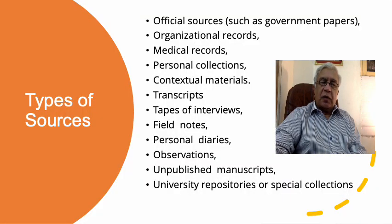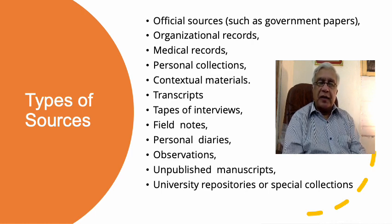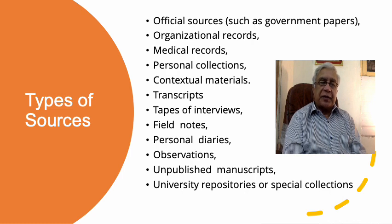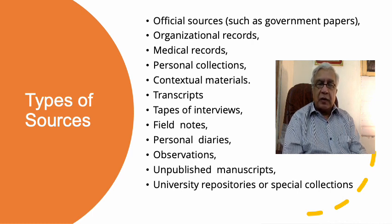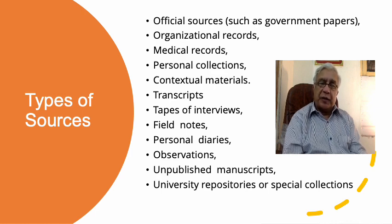Let us see what types of sources are available to the archival researcher. These sources include official sources which are published, created, and stored by government. Then there are different organizations that also keep their records — medical records, for example, maintained by medicine companies and hospitals. There are personal collections as well, where people store data of their choice, such as pictures, essays, or other information. Then there are contextual materials created in the context of specific events or phenomena.